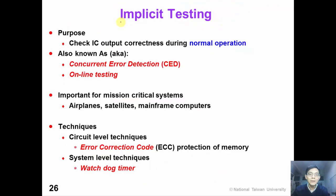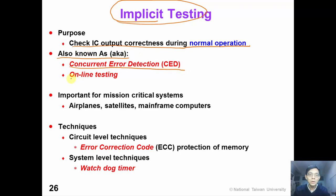The other concept related to testing is implicit testing. The purpose of implicit testing is to check our IC output and see if it is correct during normal operation. Implicit testing is also known as concurrent error detection or online testing, and is done for mission-critical systems such as airplanes, satellites, and mainframe computers. There are many implicit test techniques — for example, at the circuit level we can have error correction code (ECC) protection of memory, and at the system level we can have a watchdog timer.